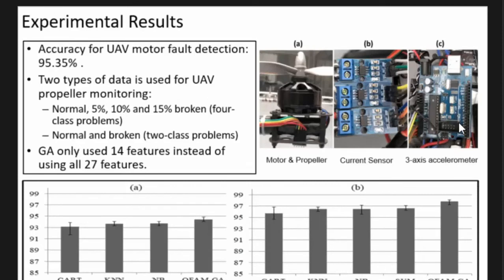As a result, we chose 14 features out of the 27 statistical features. We also tried two cases for the propeller: we cut off 5%, 10%, and 15%, and including the normal case we have a four-class problem.